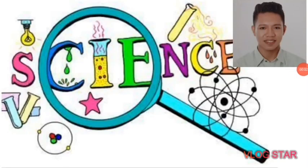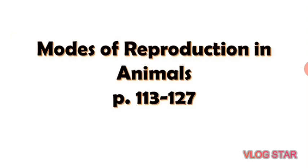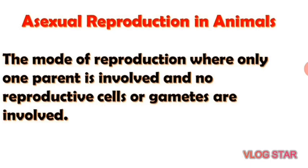Good afternoon class. Today let's talk about the modes of reproduction in animals. We have two modes of reproduction: asexual reproduction and sexual reproduction. Asexual reproduction is a mode of reproduction where only one parent is involved and no reproductive cells or gametes are involved, so you don't need a male to reproduce — only the mother animal is involved.